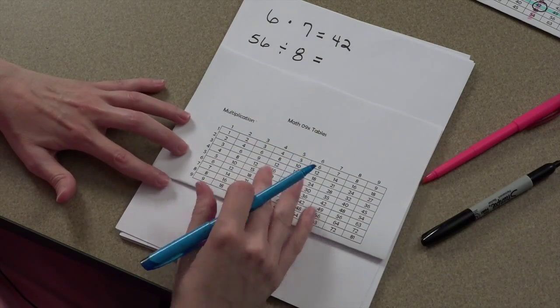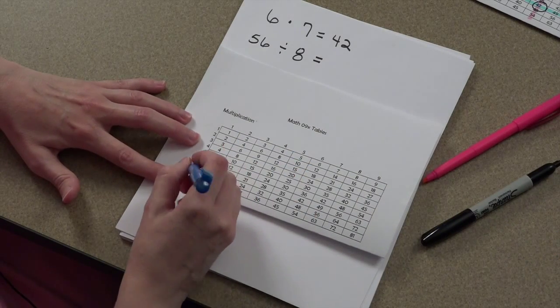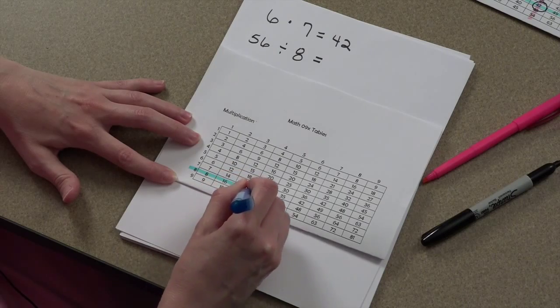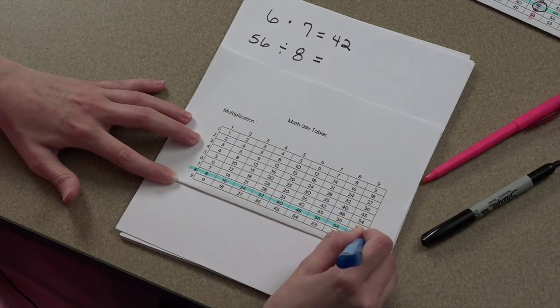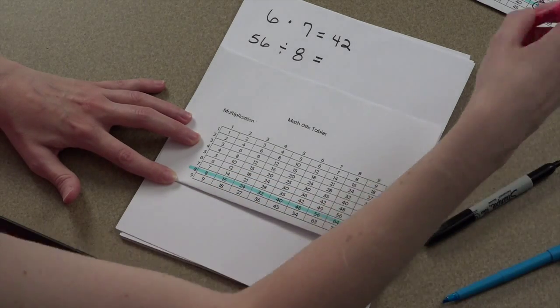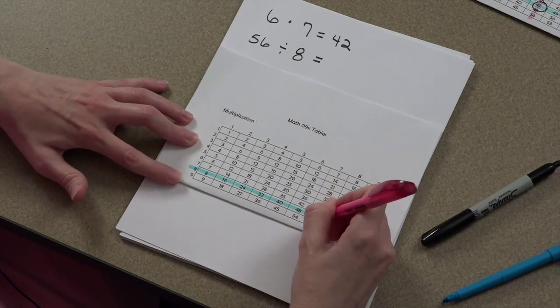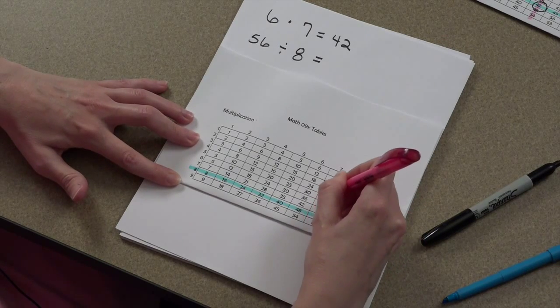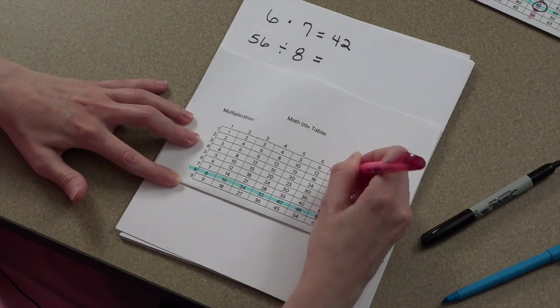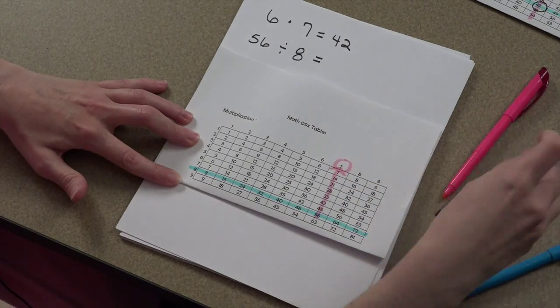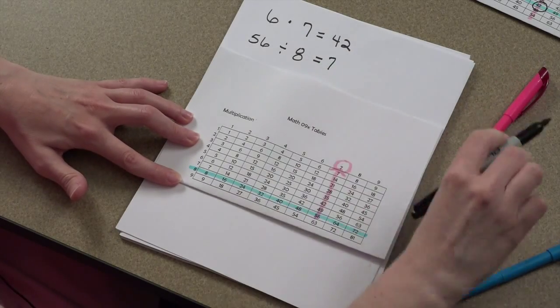Just like subtraction, you're going to come over on the row of 8, go across the row, and then you're going to come up from the number you're dealing with. So you've got the 56, you come straight up, and 7 is your answer.